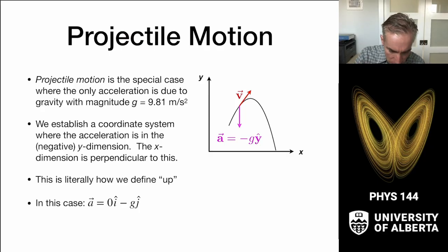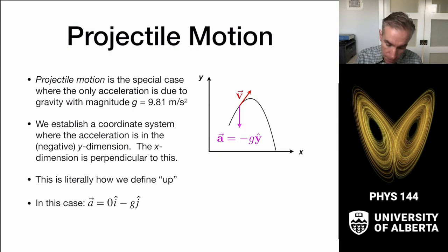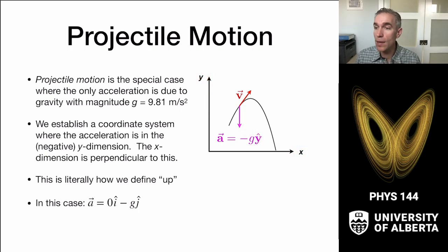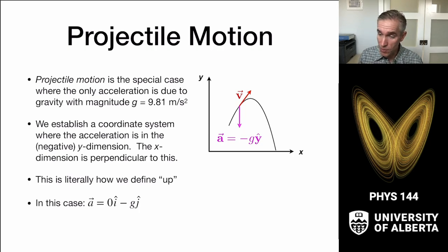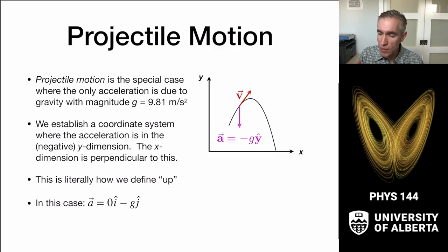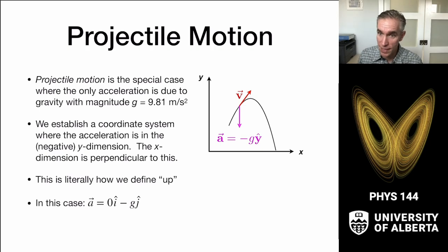Projectile motion is a special case of two-dimensional motion where we have one acceleration vector: gravity. With a y-coordinate and an x-coordinate system, the acceleration vector in projectile motion always points in the negative y direction — downward — with a magnitude of g, which on Earth we take as the standard gravity of 9.81 meters per second squared. We usually adopt a coordinate system where up is plus y, so gravity points in the negative direction and x is perpendicular to it.